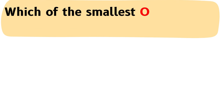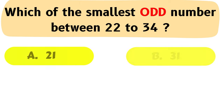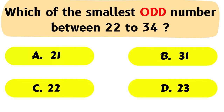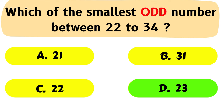Question No. 22: Which is the smallest odd number between 22 and 34? The correct answer is Option D: 23.